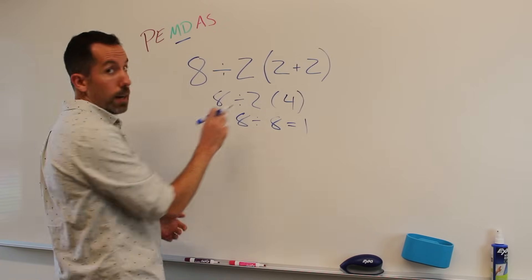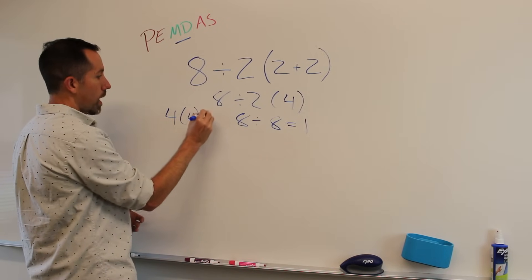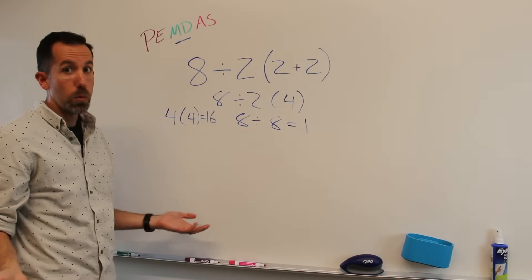But if you do the 8 divided by 2 first, you get 4 times 4, and that equals 16. So which one's right?